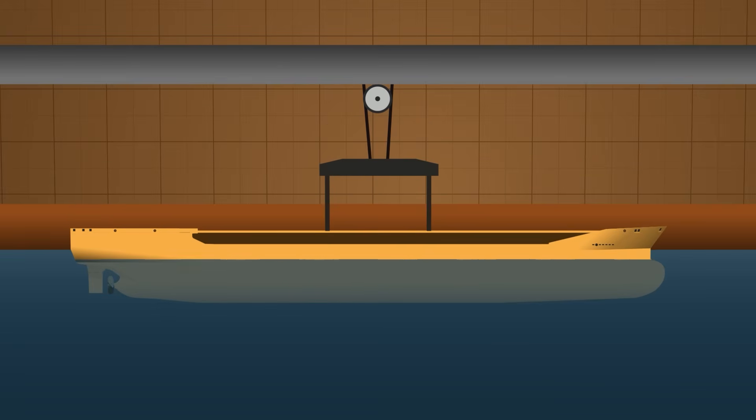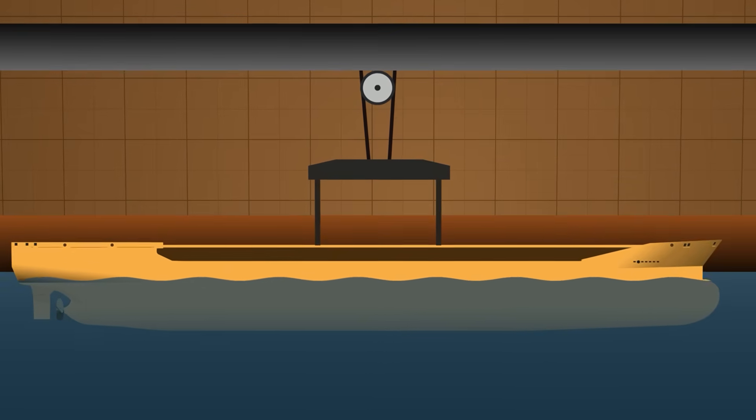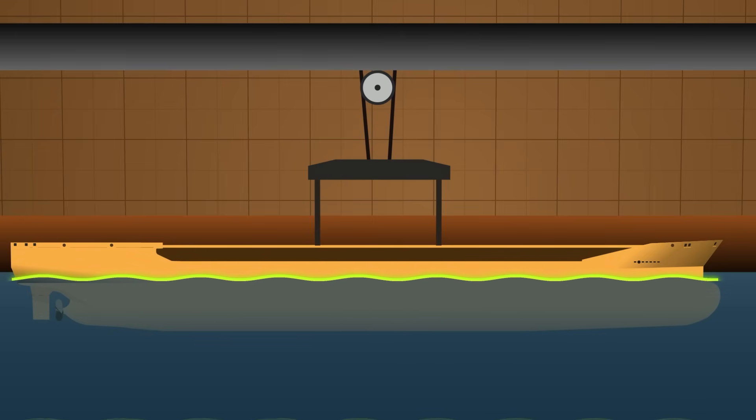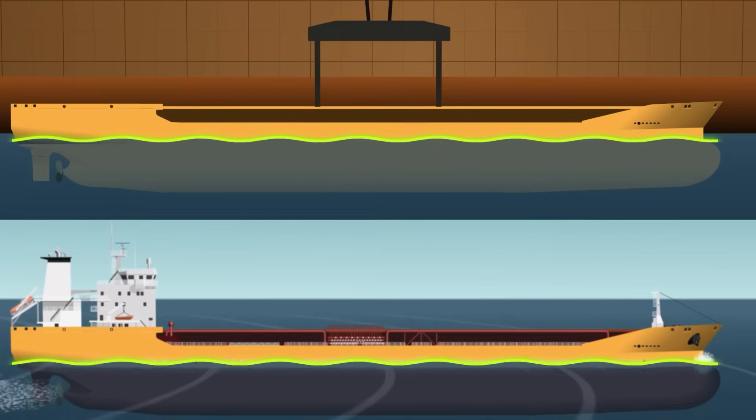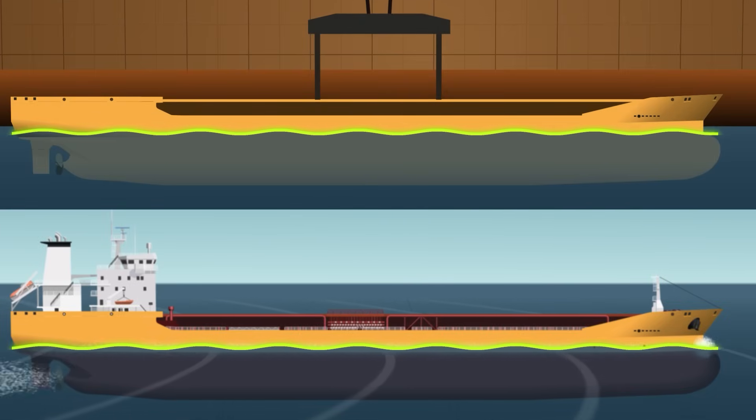The result is often a deceptively low test speed, sometimes just a few knots, but that's the speed at which the model will produce waves identical in shape, proportion, and energy balance to those of the full-size ship.